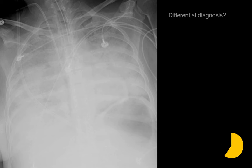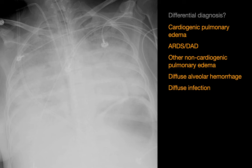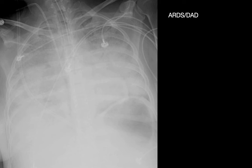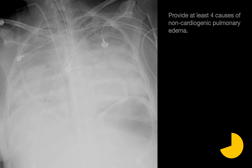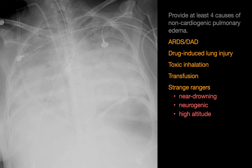What's your differential diagnosis for this case? The findings are a diffuse bilateral consolidative pattern with subtle coexisting interstitial opacities. The differential diagnosis for diffuse consolidation applies here. This case is an example of ARDS diffuse alveolar damage. Diffuse alveolar damage is one cause of non-cardiogenic edema. Other causes include drug-induced lung injury, toxic inhalation, transfusion-related acute lung injury, and unusual causes such as near-drowning, neurogenic pulmonary edema, and high-altitude pulmonary edema. This list should not be considered exhaustive.